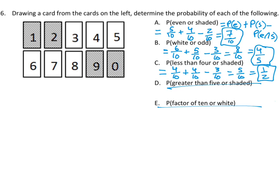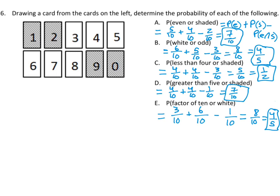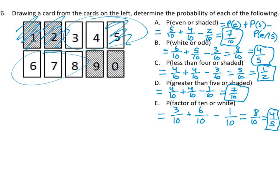Go ahead and try the next two, then check how you did. For probability of greater than five or shaded: greater than five gives four numbers, so 4/10. Shaded is four cards, so 4/10. The cards that are both shaded and greater than five — that's just nine — only one of them, so subtract 1/10. That gives you 7/10. The next one: factors of ten — numbers that divide evenly into ten — are 1, 2, and 5, so there are three of them. There are six white cards. The cards that are both factors of ten and white is just the number five — one card — so subtract 1/10, leaving 8/10, which reduces to 4/5. Hopefully that gives you an idea of how these probabilities work. Good luck on the assignment — make sure you're checking solutions and getting these calculations right.